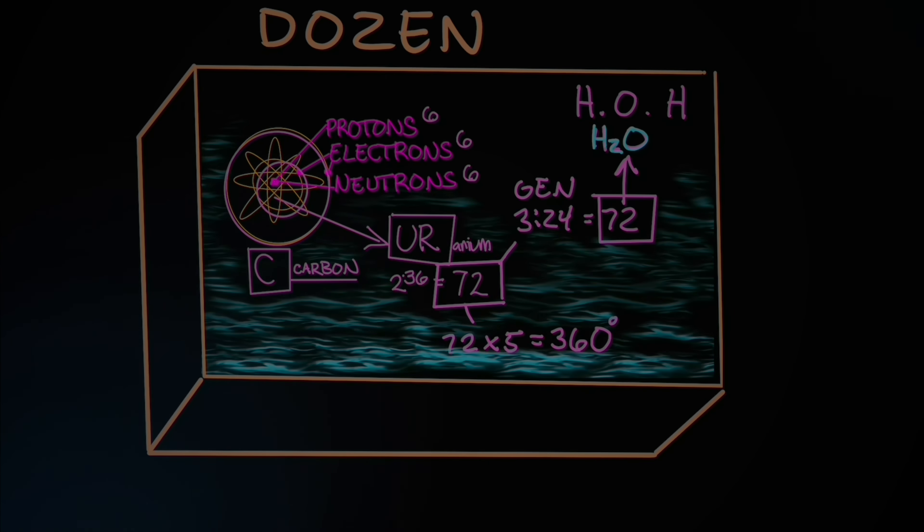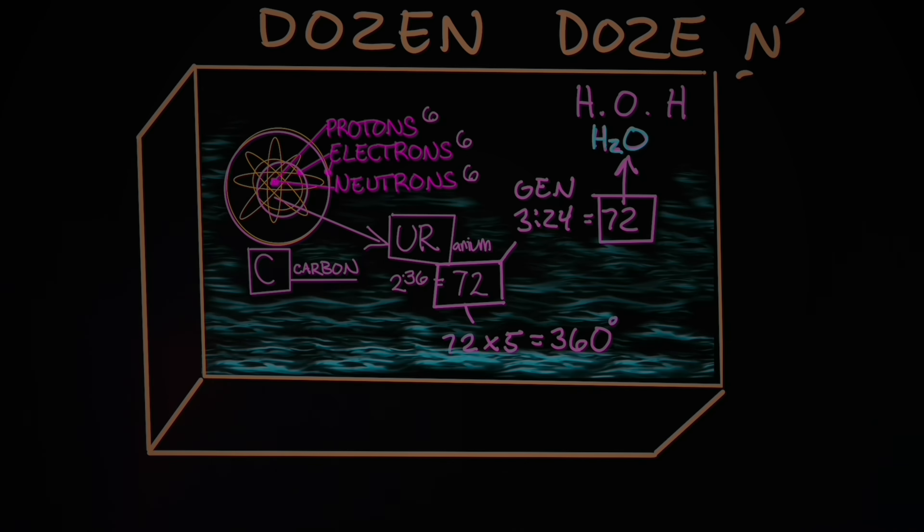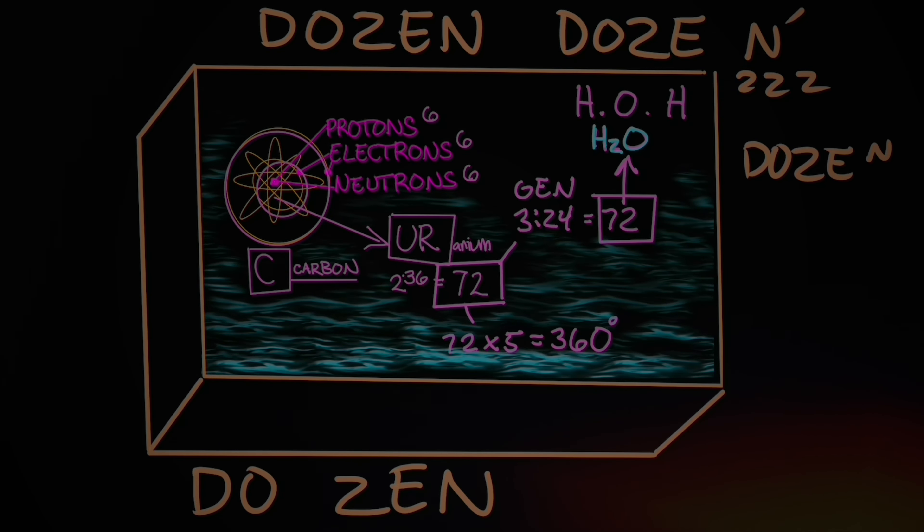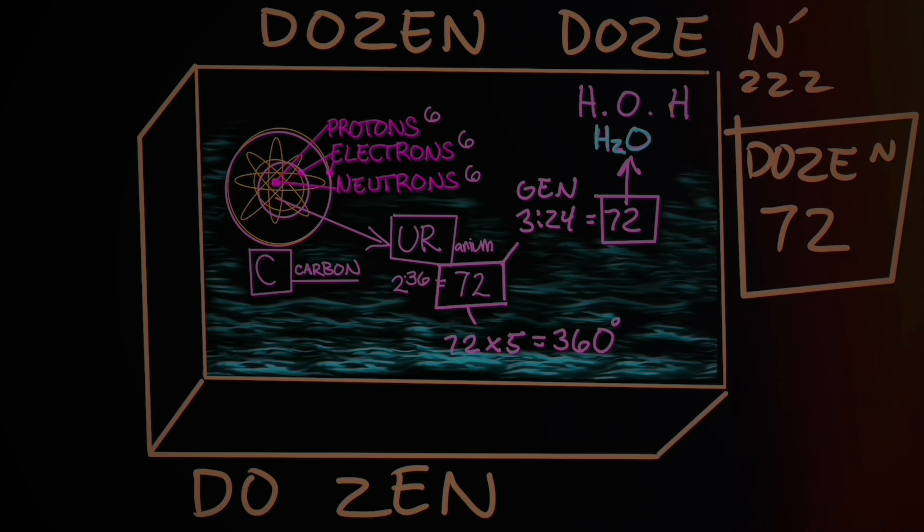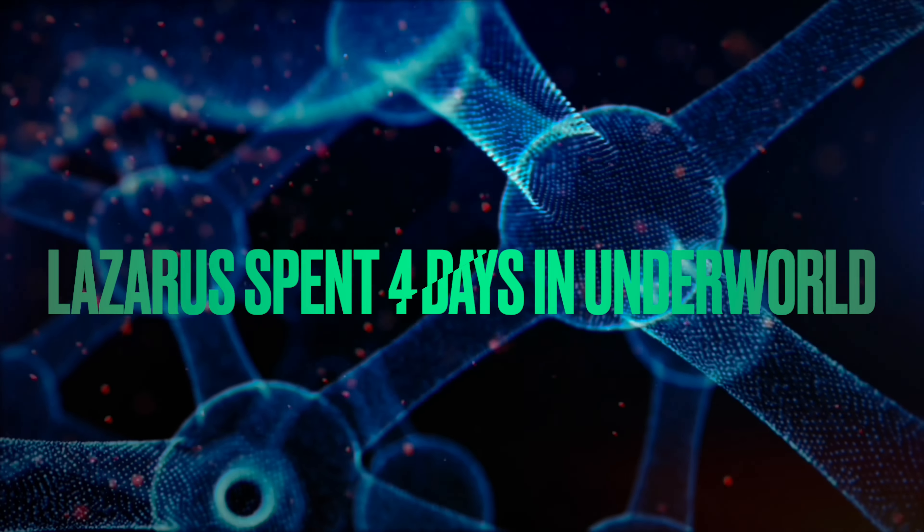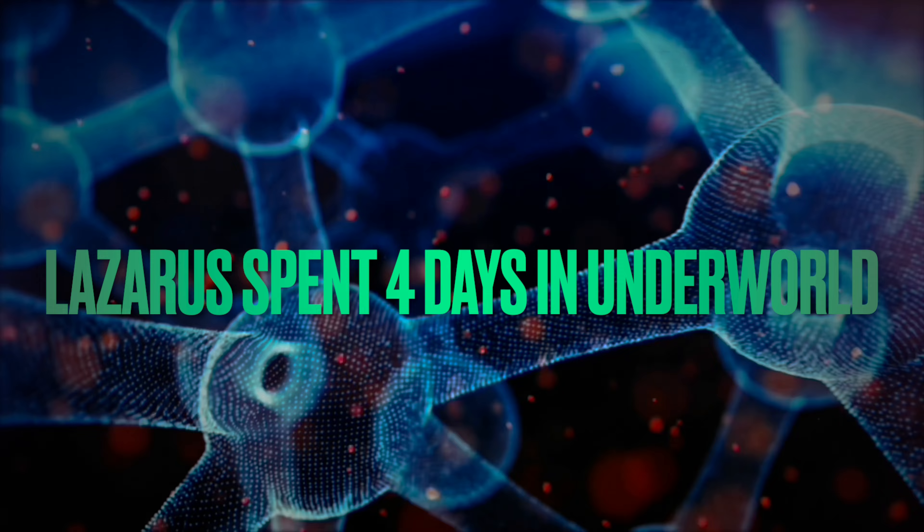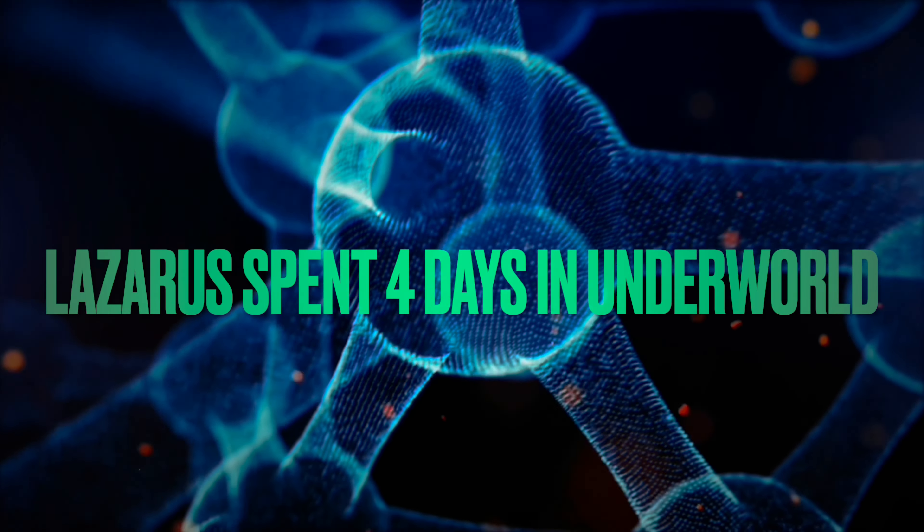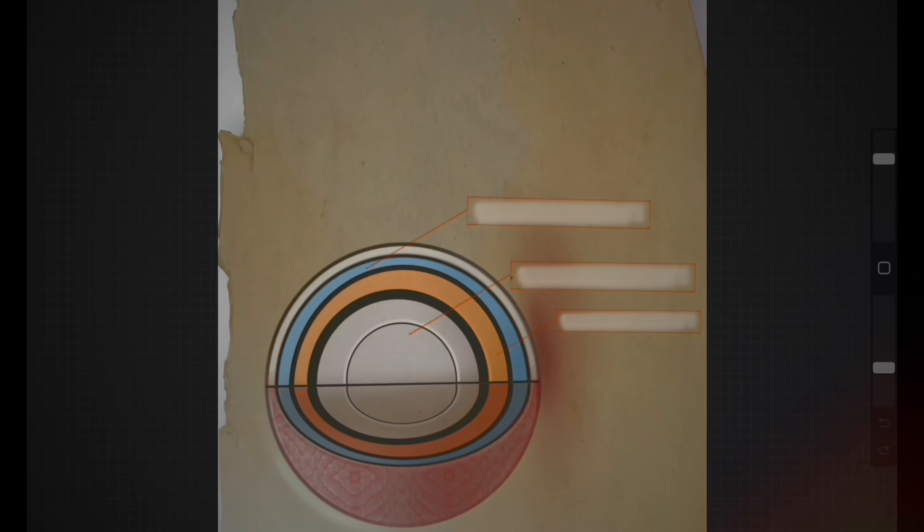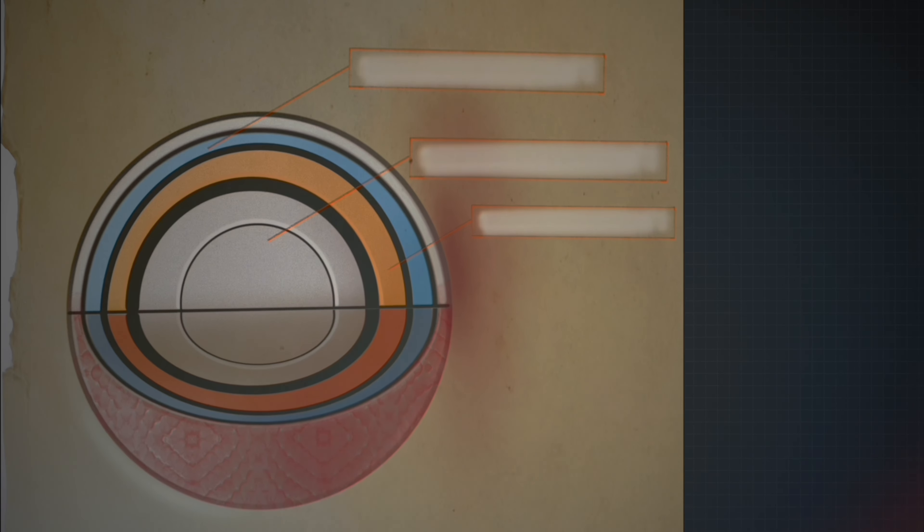I bought a donut and they gave me a receipt for the donut. I don't need a receipt for a donut. I'll just give you the money. You give me the donut. End the transaction. We don't need to bring ink and paper into this. I just cannot imagine a scenario where I would have to prove that I bought a donut. Some skeptical friend don't even act like I didn't get that donut. I got the documentation right here.